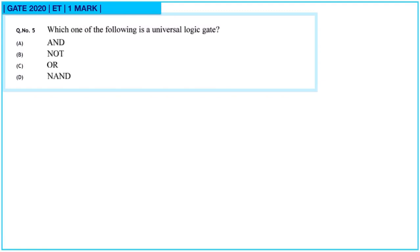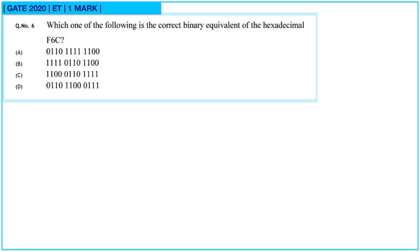Hello GATE aspirants, welcome to part 11 of the GATE Electronics series. Question 5: which one of the following is a universal logic gate? We have only two universal logic gates — NAND and NOR — so option D is correct.